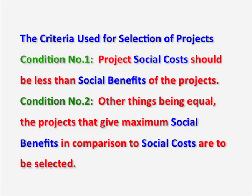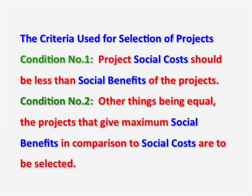When selecting projects, there are criteria that have to be taken into consideration. The first condition is that the project's social cost should be lesser than the social benefits — that means the benefits should outweigh the social cost so that the project can be implemented. The second condition is, all other things being equal, if several projects come up for evaluation, whichever project gives better benefit to the society, such projects have to be selected. So social cost should be lesser than social benefits while evaluating the project.